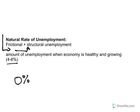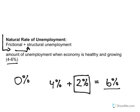For example, if the natural rate is four percent and then we have cyclical unemployment of two percent, we're really dealing with six percent unemployment, which is just to the edge of what is considered healthy. By trying to eliminate this two percent, we can move the economy back to that four percent that is healthy.